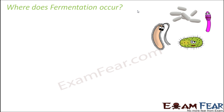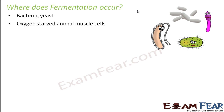Where does fermentation occur? It mostly happens in microorganisms like bacteria and yeast which live under anaerobic conditions. It is also seen in oxygen-starved animal muscle cells. For example, when somebody is doing vigorous exercise, they suddenly need a lot of energy. Since not too much oxygen is available to the muscle cells at that time, anaerobic respiration happens, lactic acid is formed, and that provides the energy required at that instant.